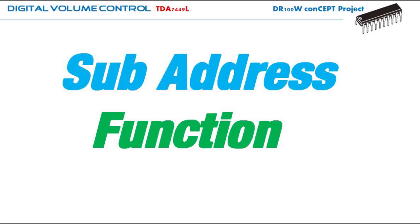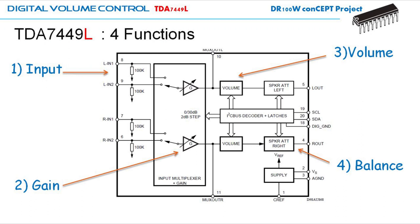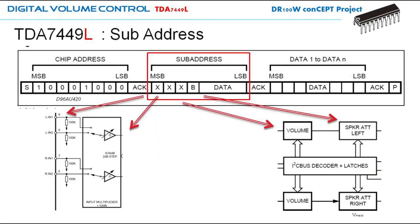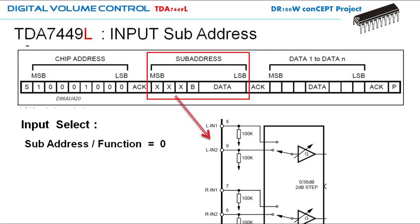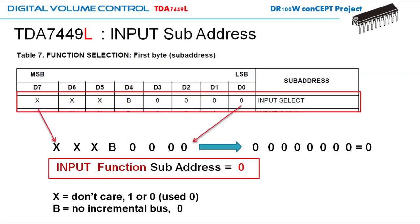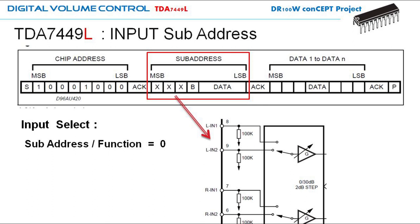Knowing some basics of the I2C protocol, we can now enable the four functions: input, gain, volume, and balance. According to the datasheet, the way the address is used is called a subaddress. To enable the input, we specify the data for this function to be 0, as seen from table 7 of the datasheet. The subaddress is only to select the function — we are selecting the input, not yet choosing input 1 or input 2.